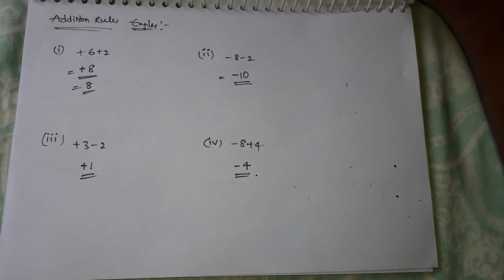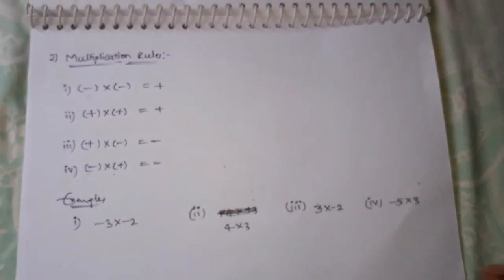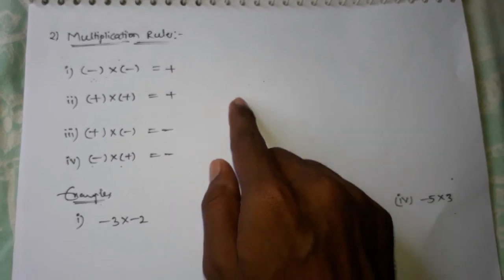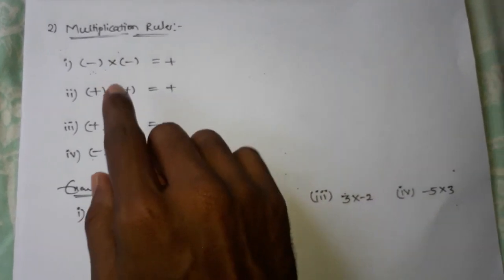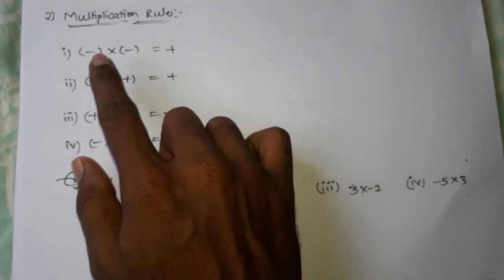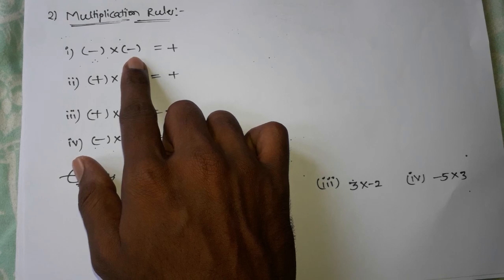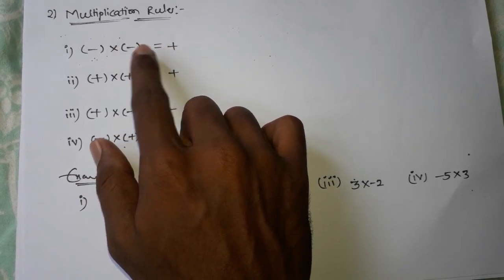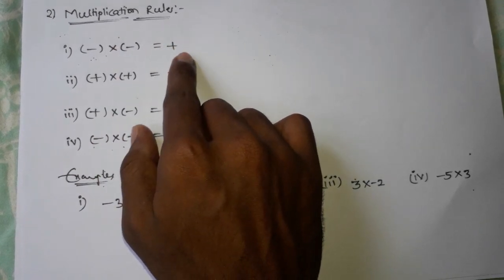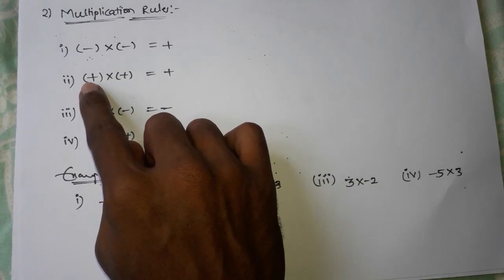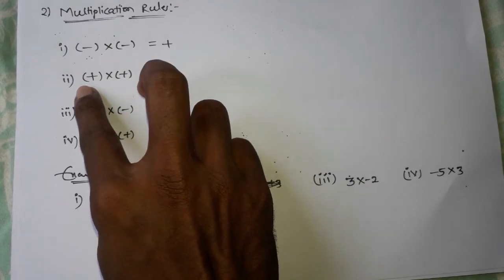Second: multiplication rules. When two numbers have the same sign, the result of multiplication is positive.